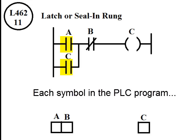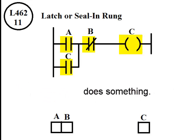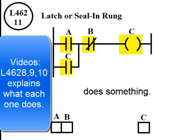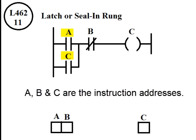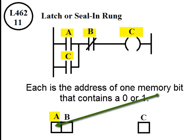Each symbol in the PLC program does something, which was explained in previous videos. A, B, and C are instruction addresses. Each is the address of one memory bit that contains a zero or a one.